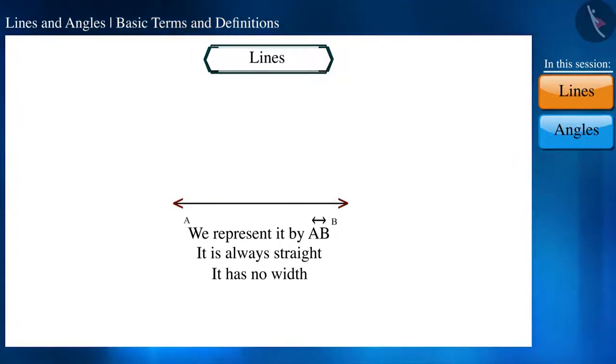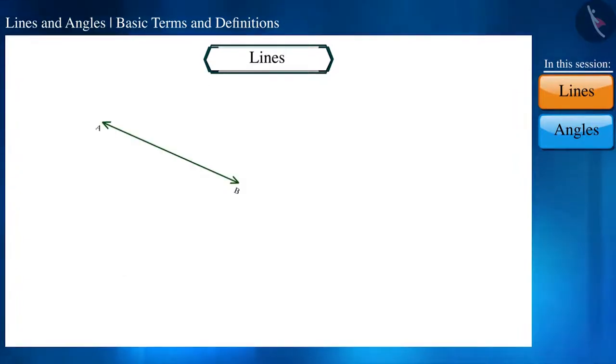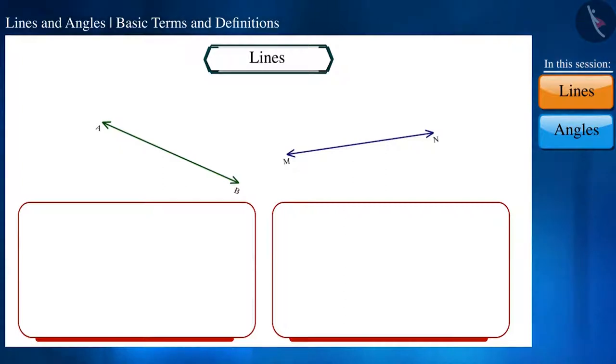Let's take these two lines AB and MN. In how many ways do you think we can draw them? Friends, we can draw them in two different ways. First is that both of them intersect each other somewhat like this, where point C is their point of intersection. That is why they're called intersecting lines.